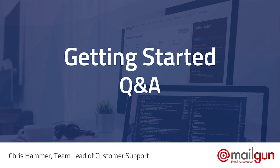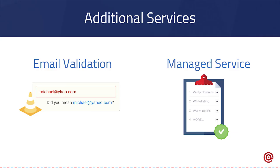We offer a 'did you mean' suggestion. So if they mistype, say, their domain name — in this case 'why-who.com' instead of 'yahoo.com' — it'll flag that. It also covers cases like Gmail misspellings such as 'gmai' versus 'gmail.'